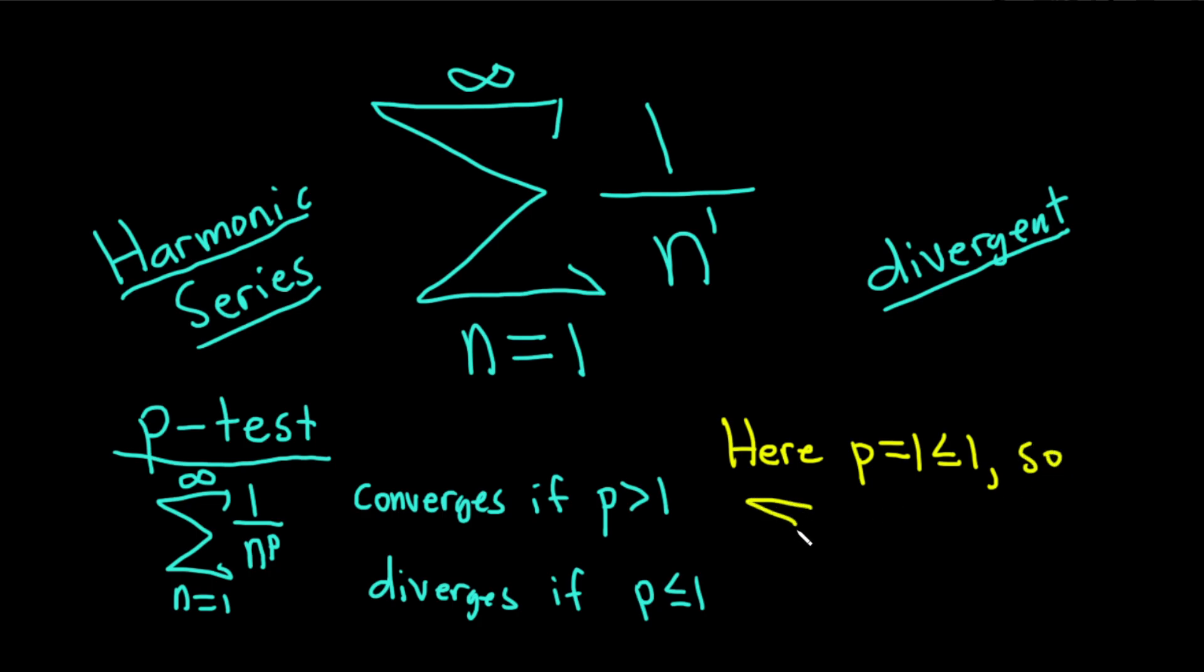So our series, the sum as n runs from 1 to infinity of 1 over n, diverges. And why? It diverges by the p-test. That's the test we're using, that test we're invoking to justify our solution.